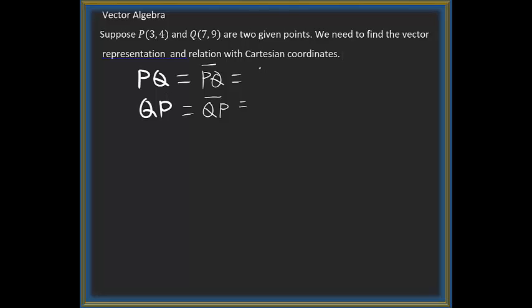So the vector PQ can be written as: Q is the terminal, so 7 minus 3 and then 9 minus 4. This is 4 comma 5, or you can say 4i plus 5j.